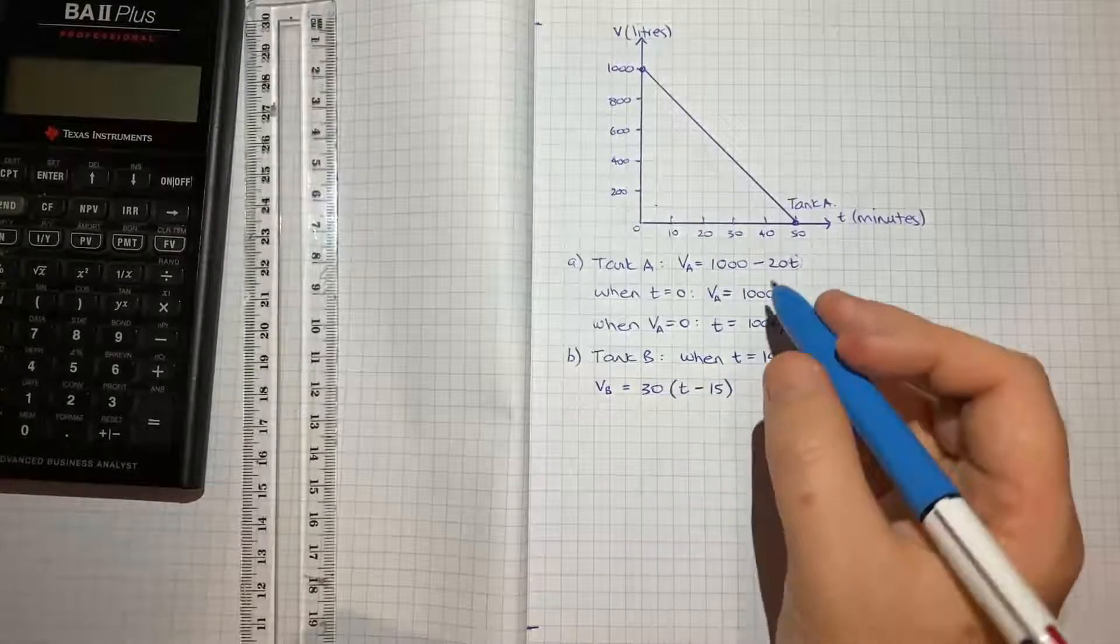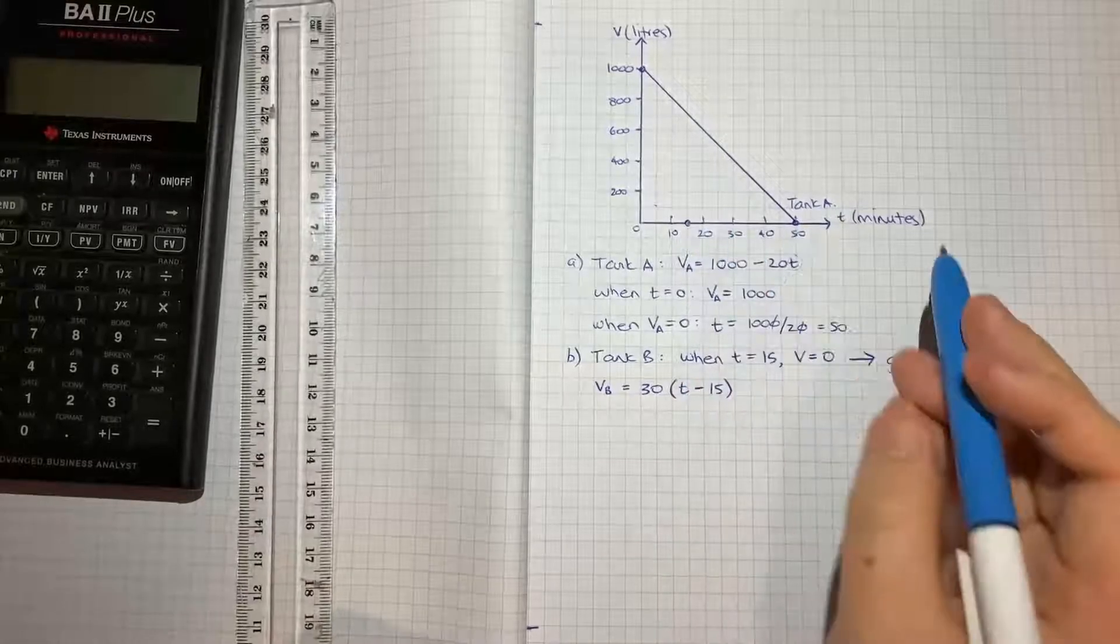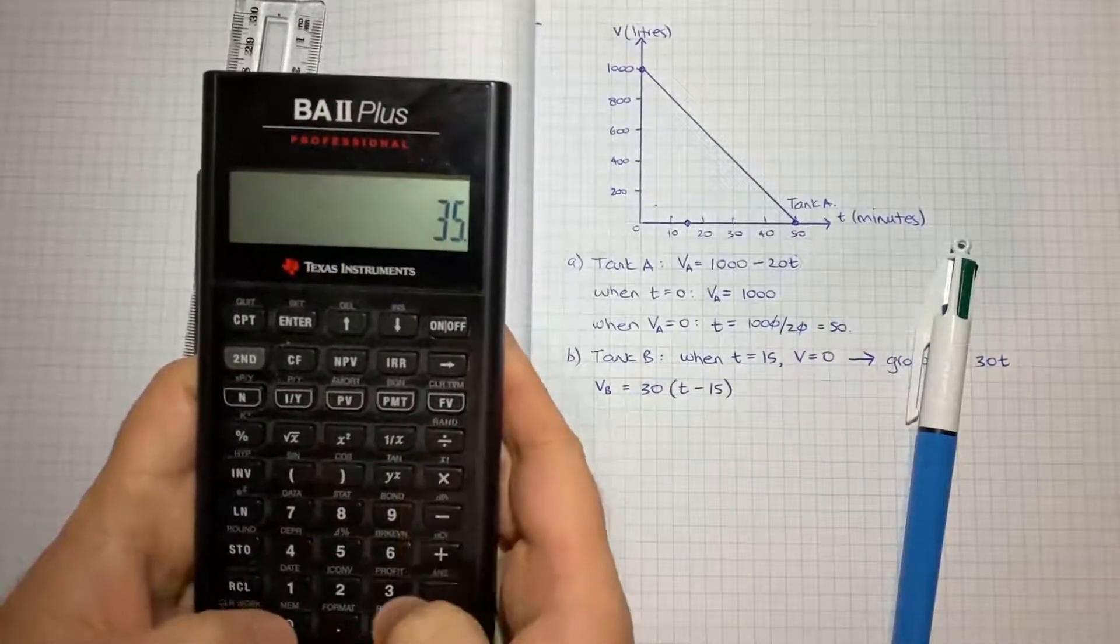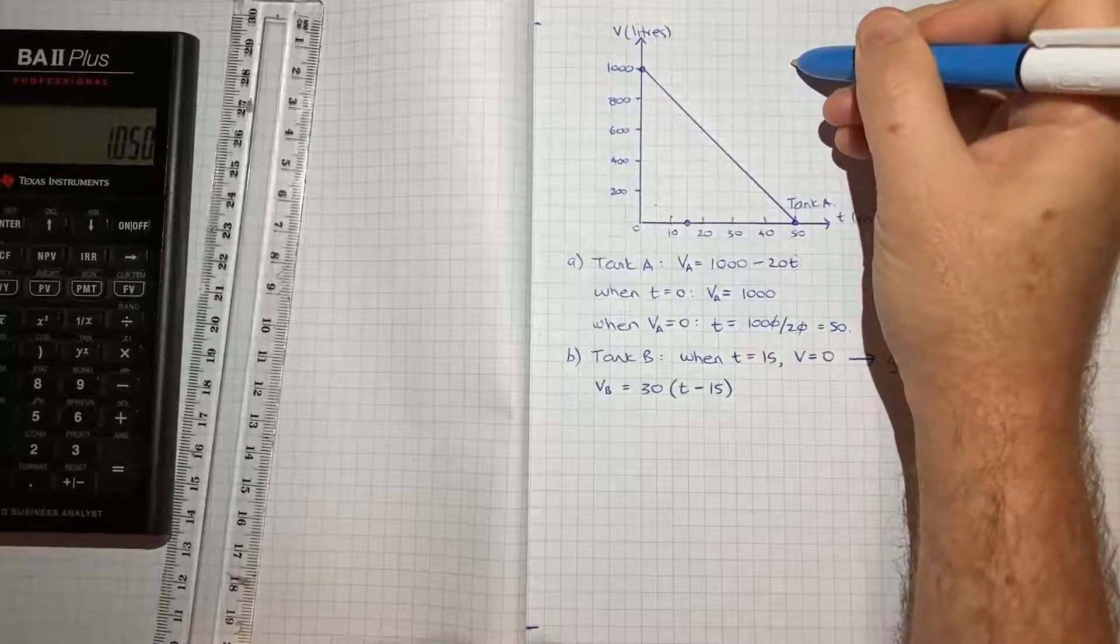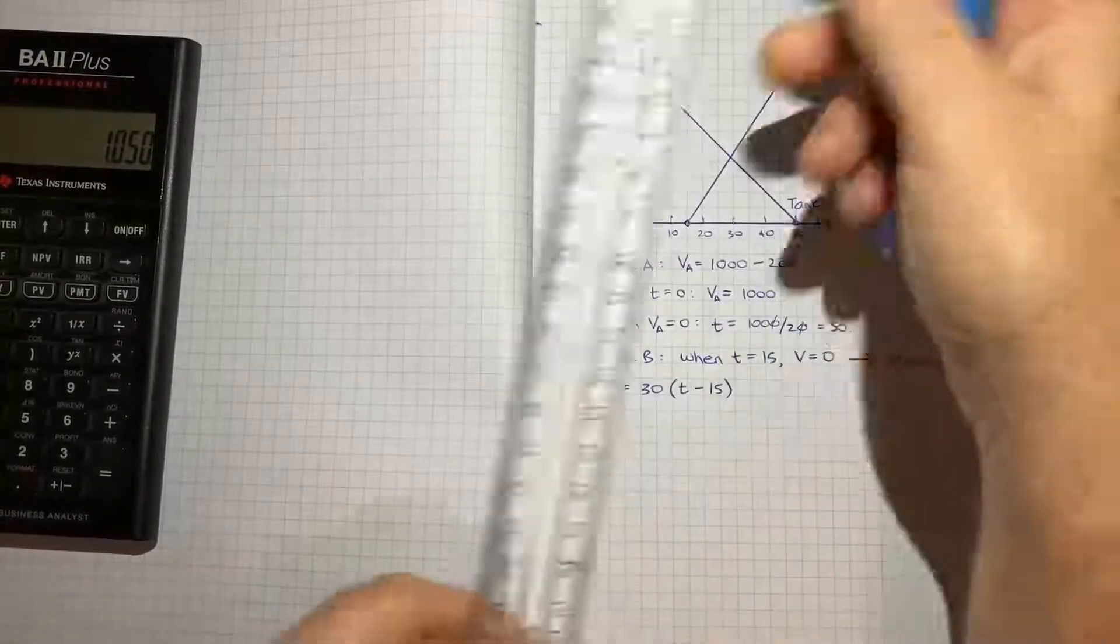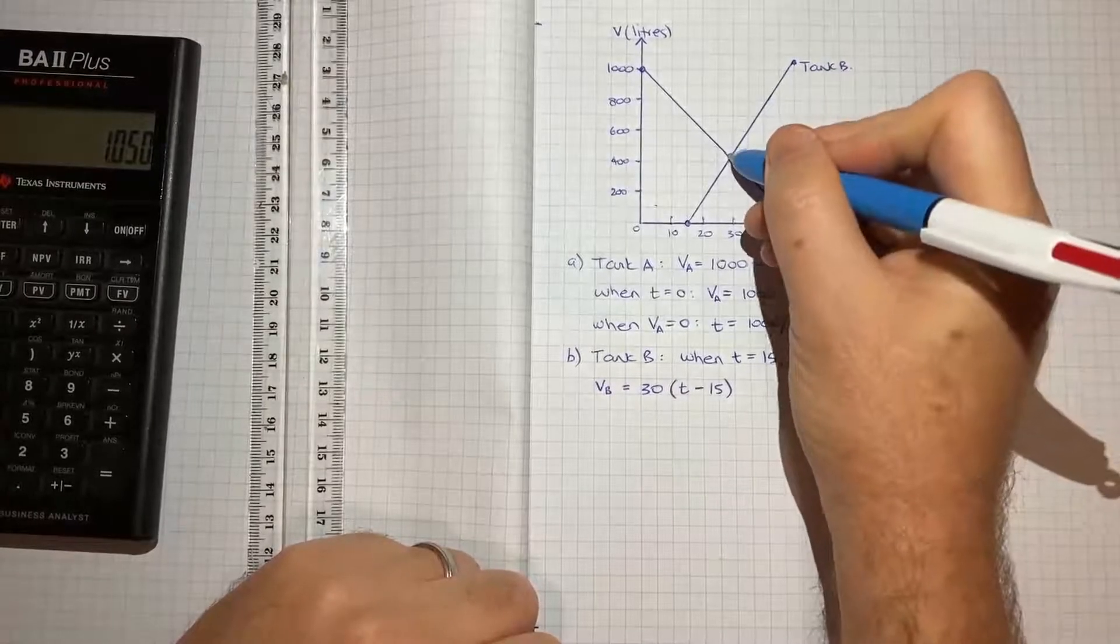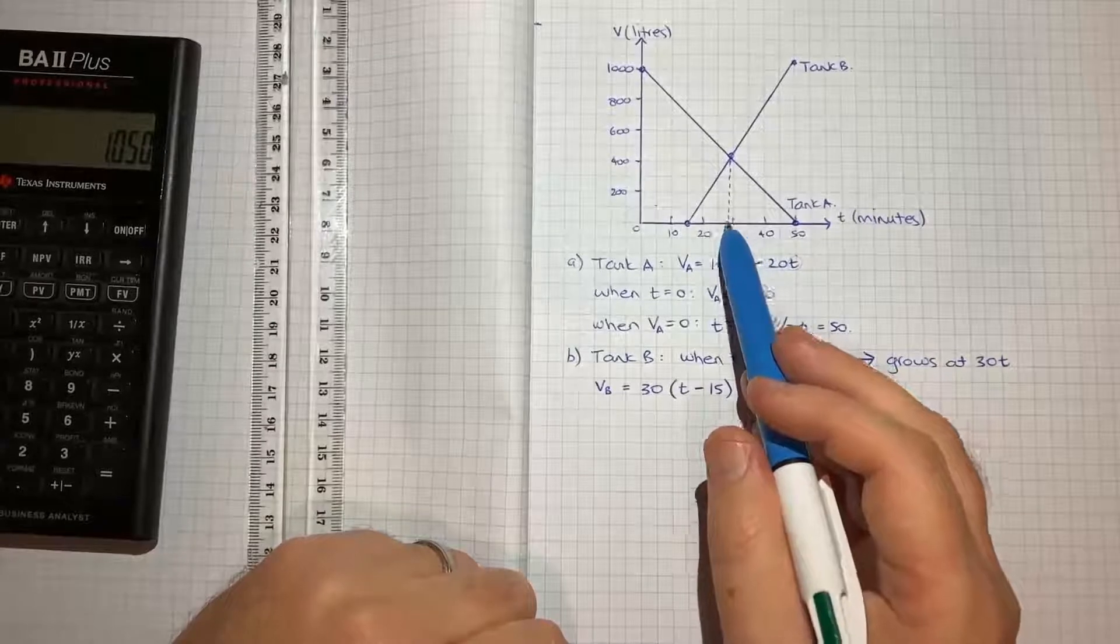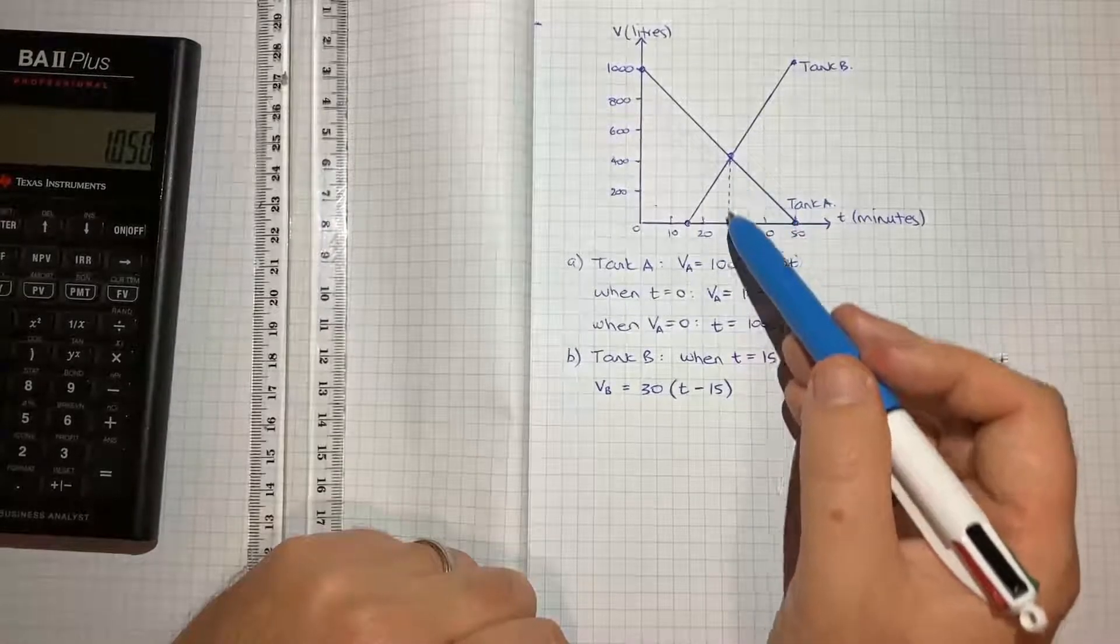If I plot that, we know when T = 15, the volume is zero. If I pick another point, let's say T = 50, in my calculator 50 - 15 times 30 is 1050. So 1050 is about there. If I join those two dots and label that tank B, by visual inspection we can see these two lines intersect just below T = 30. I'd guess about T = 29. If you were to draw this on the detailed grid paper in the question, you'd be able to confidently know what that number is.